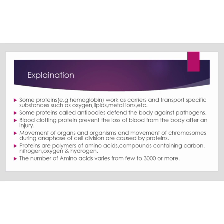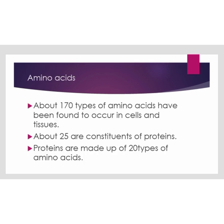Proteins are polymers of amino acids — compounds containing carbon, nitrogen, oxygen, and hydrogen. The number of amino acids in a protein varies from a few to 3,000 or more. About 170 types of amino acids have been found in cells and tissues, but only about 20 types are constituents of proteins.